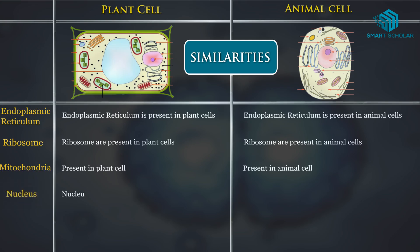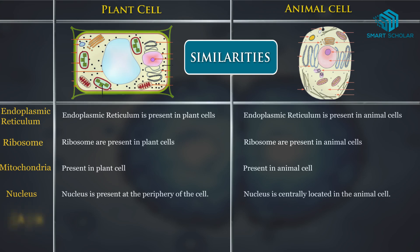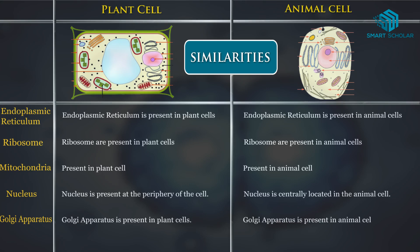Nucleus: the nucleus is present at the periphery of the plant cell, whereas the nucleus is centrally located in animal cells. Golgi apparatus: the Golgi apparatus is present in plant cells, and in the same way, the Golgi apparatus is present in animal cells.